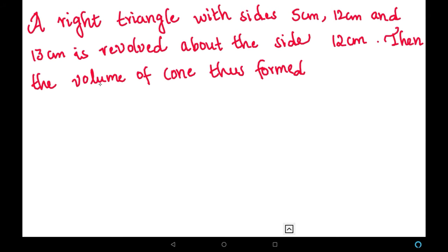A right triangle with sides 5 cm, 12 cm and 13 cm is revolved about the side 12 cm. Then the volume of the cone thus formed is to be found. So this is a right angle triangle.